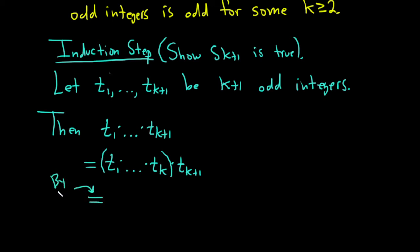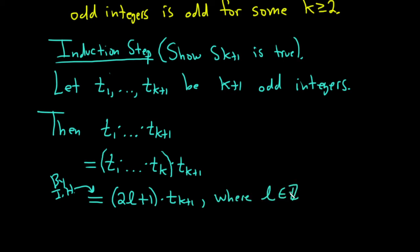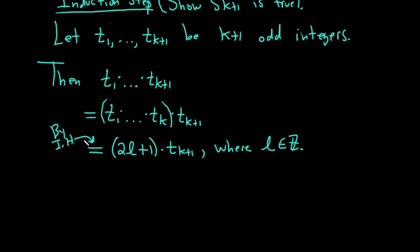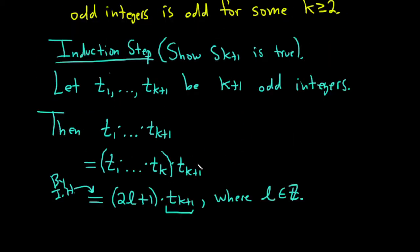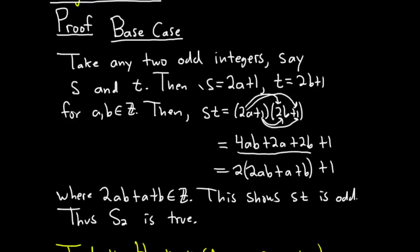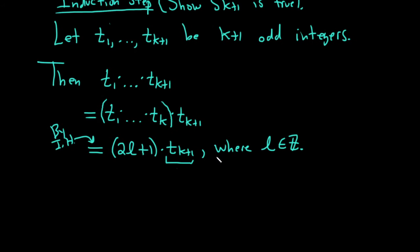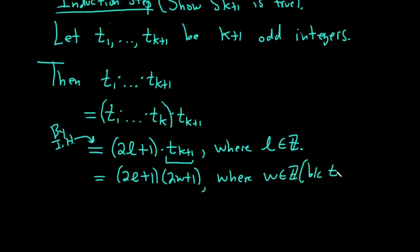So this will be equal to (2l + 1) · t_{k+1}, where l is an integer, because that product is odd by the induction hypothesis. But we know t_{k+1} is also odd, so we can write it as (2l + 1)(2w + 1), where w is in the integers — this step because t_{k+1} is odd.